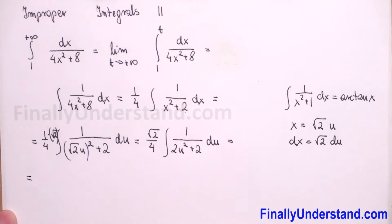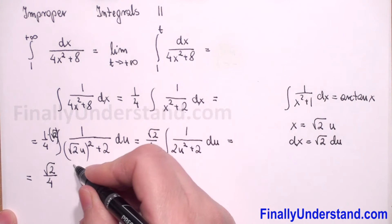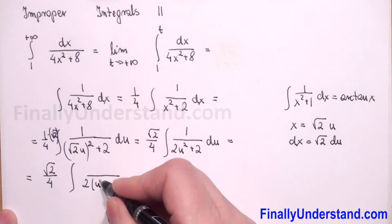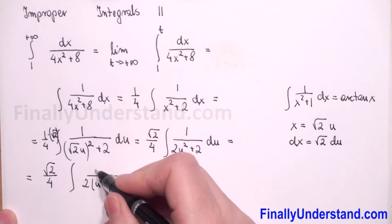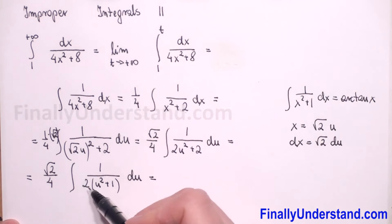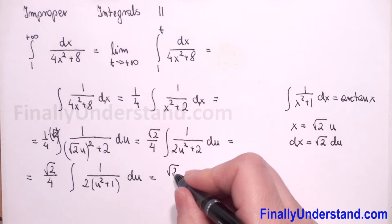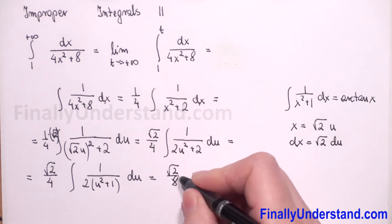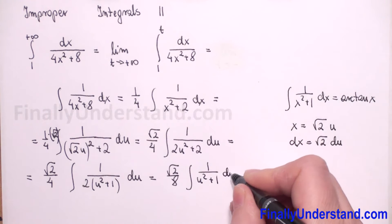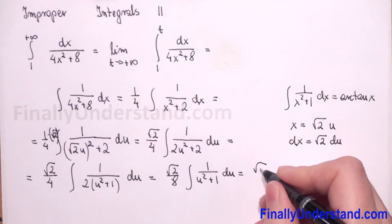Next I will factor out 2 in the denominator, giving square root of 2 over 4 times the integral of 1 over 2 times (u squared plus 1) du. The factor of 1 over 2 comes before the integral symbol, so we have square root of 2 over 8 times the integral of 1 over u squared plus 1 du.